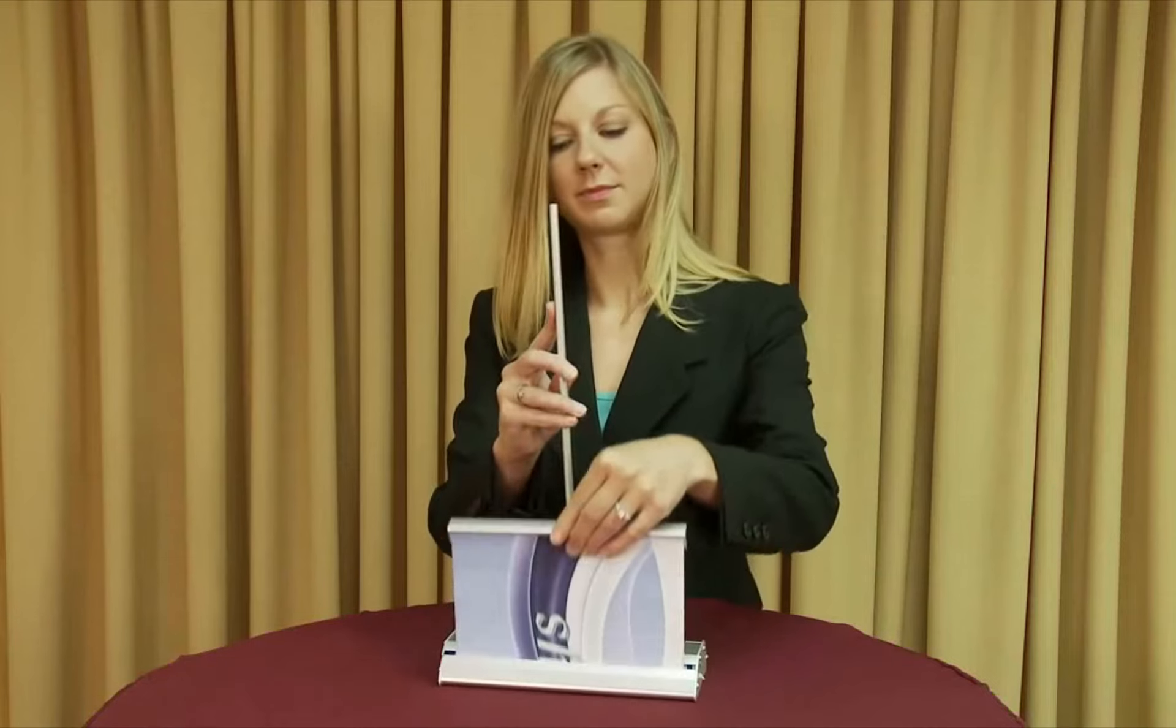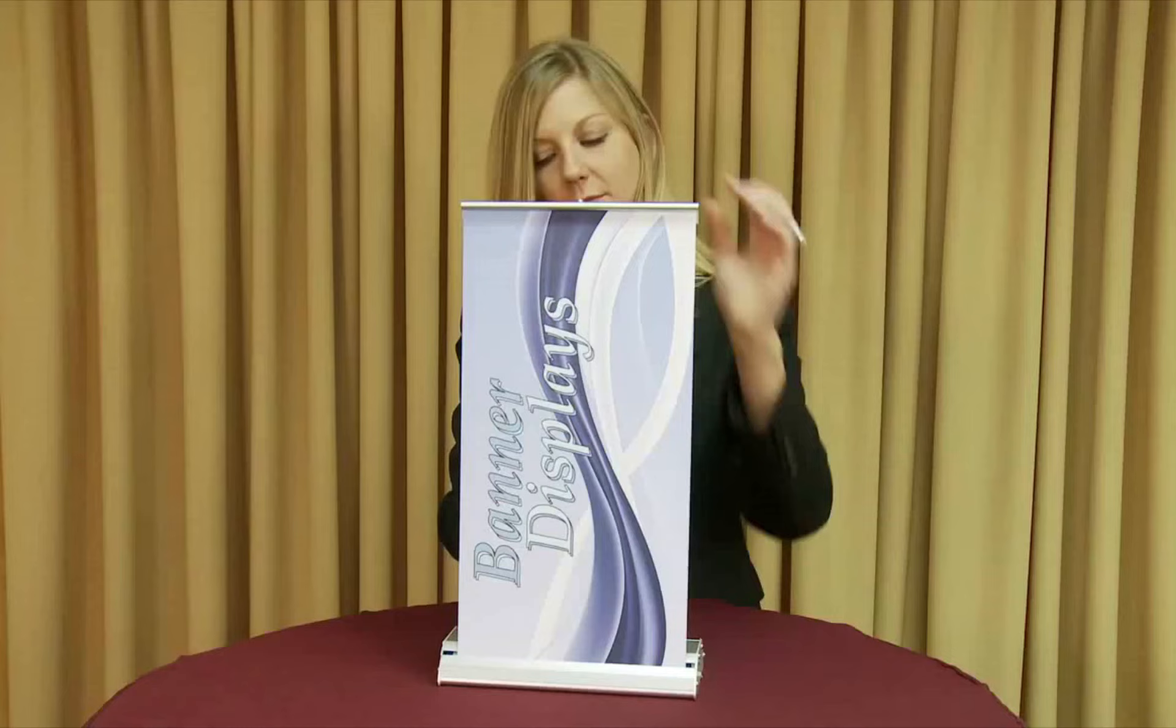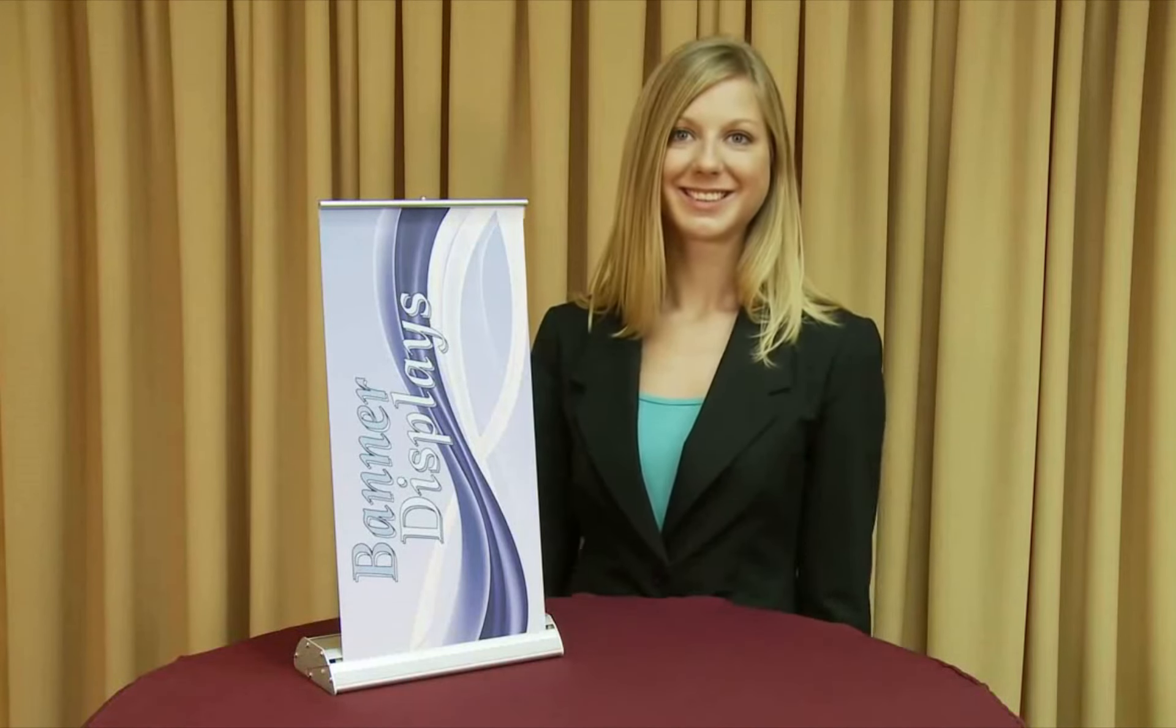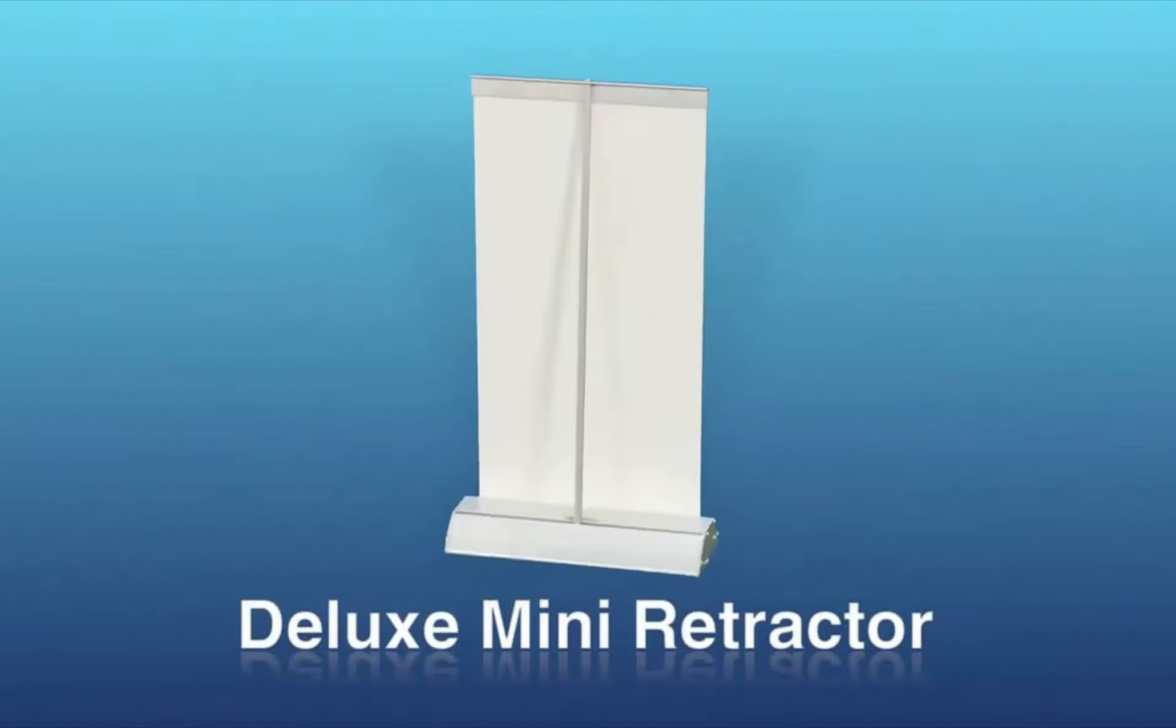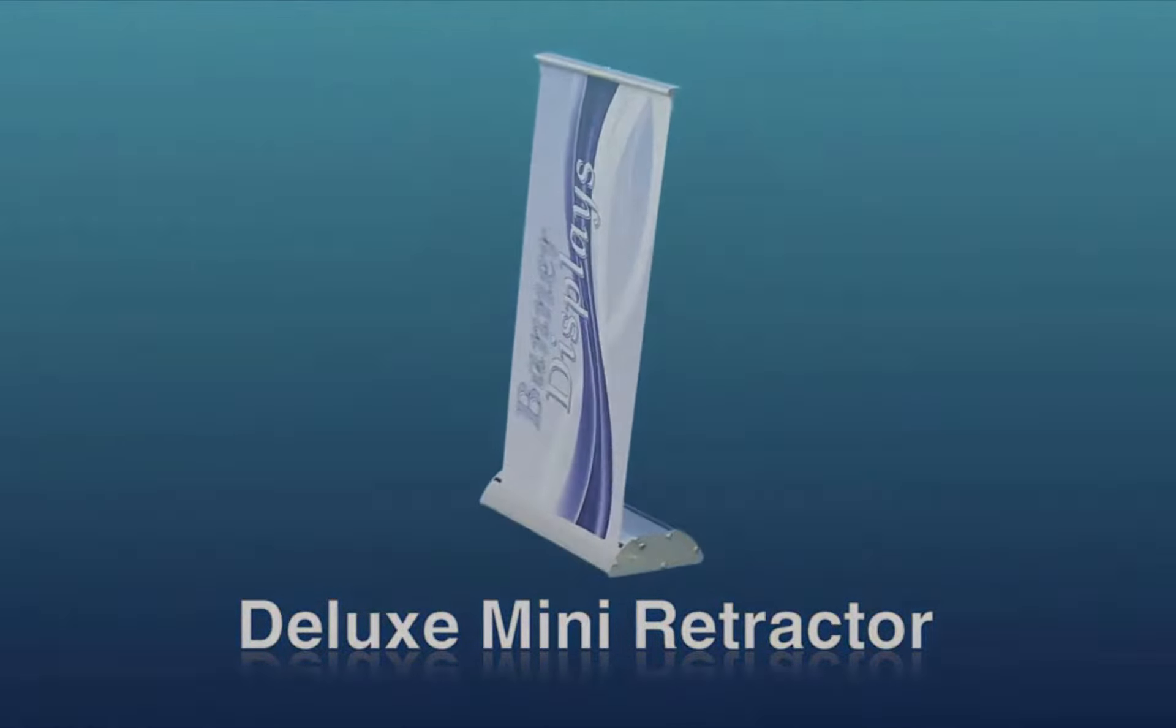Gently pull the banner rail upwards and insert the banner rail screw into the receptacle on the top of the pole. Once set, your Deluxe Mini Retractor is complete and ready to use.